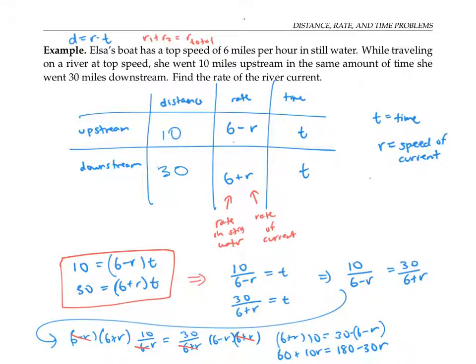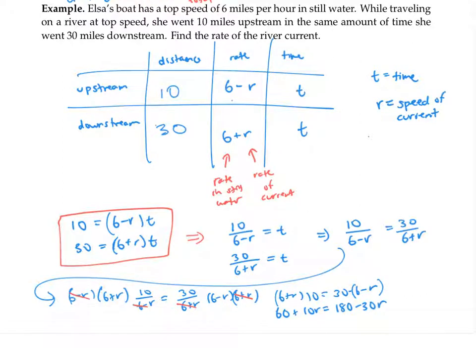Which I can now solve, let's see, that's going to be 40r is equal to 120. So r, the speed of my current is going to be three miles per hour.